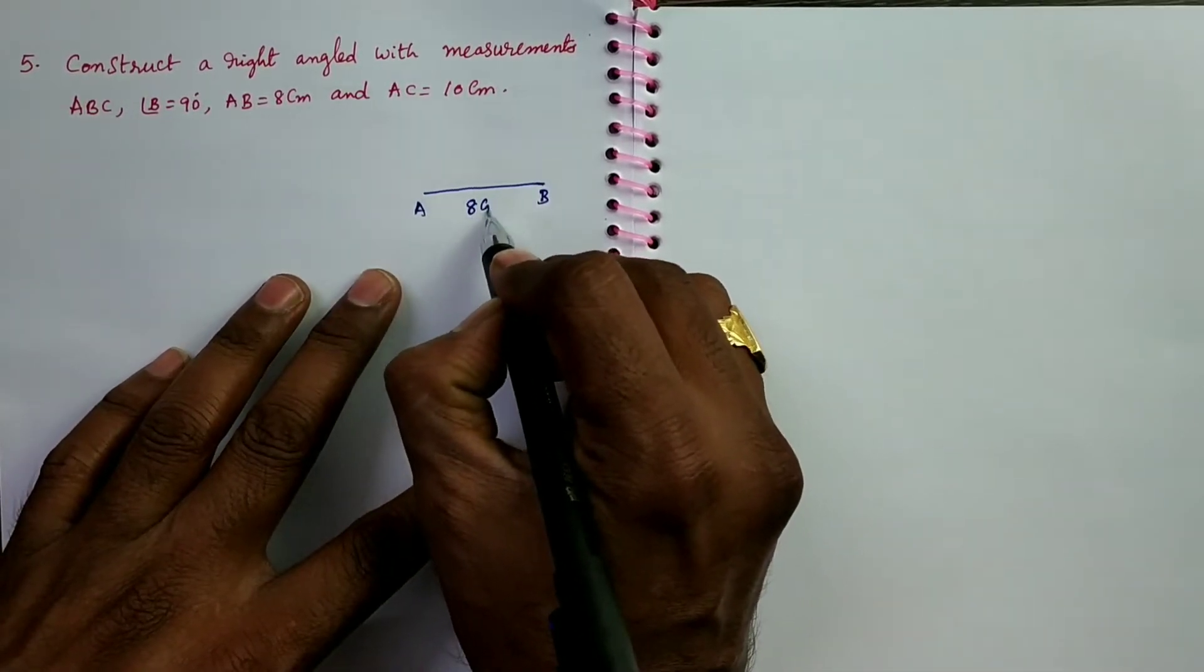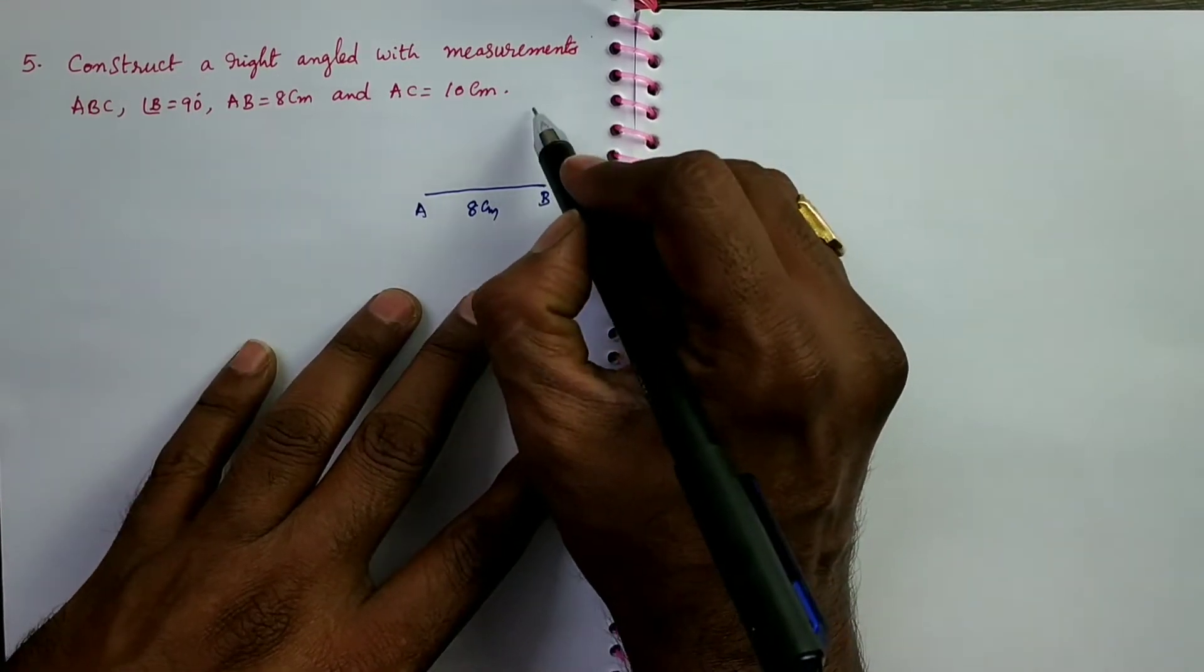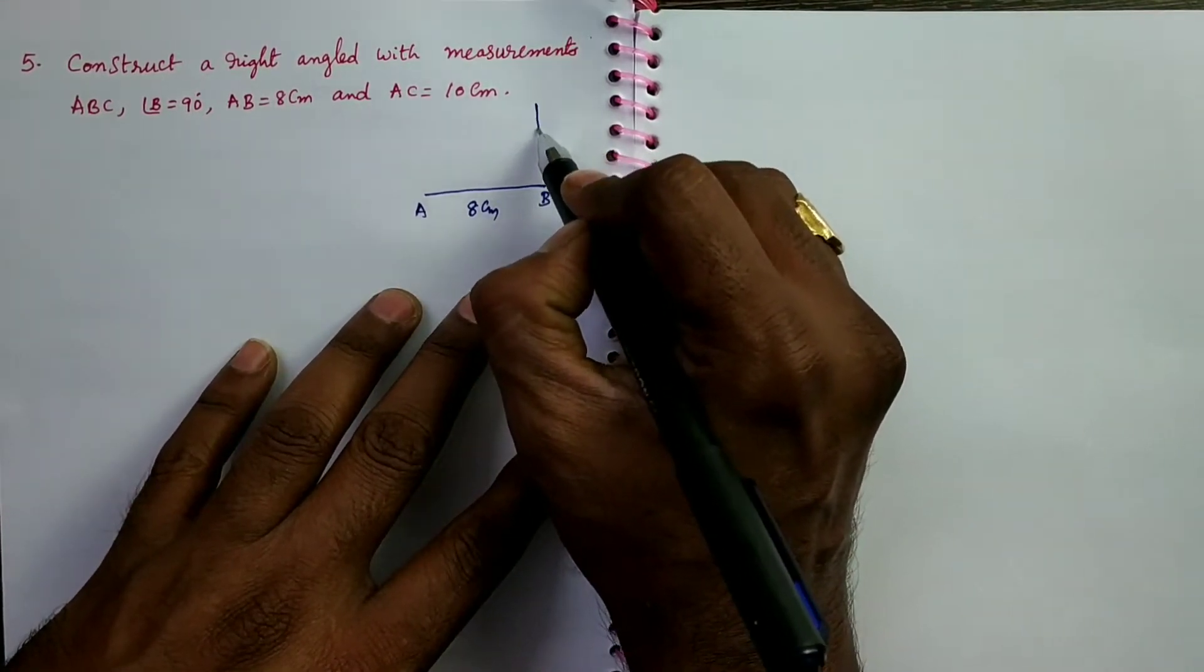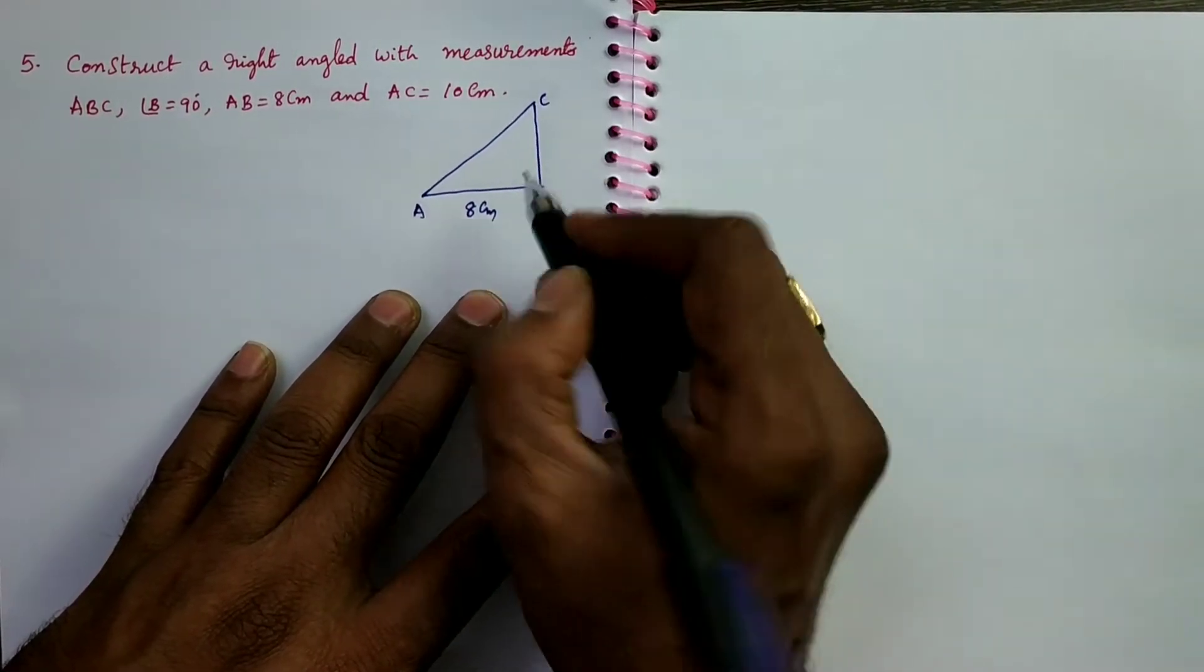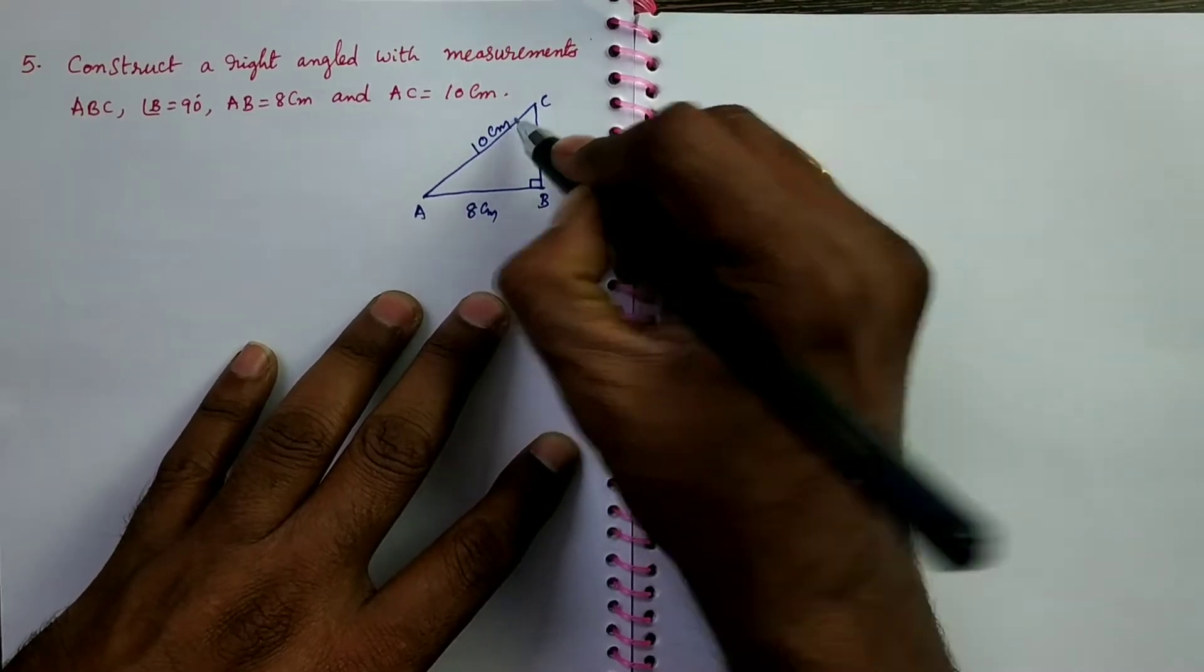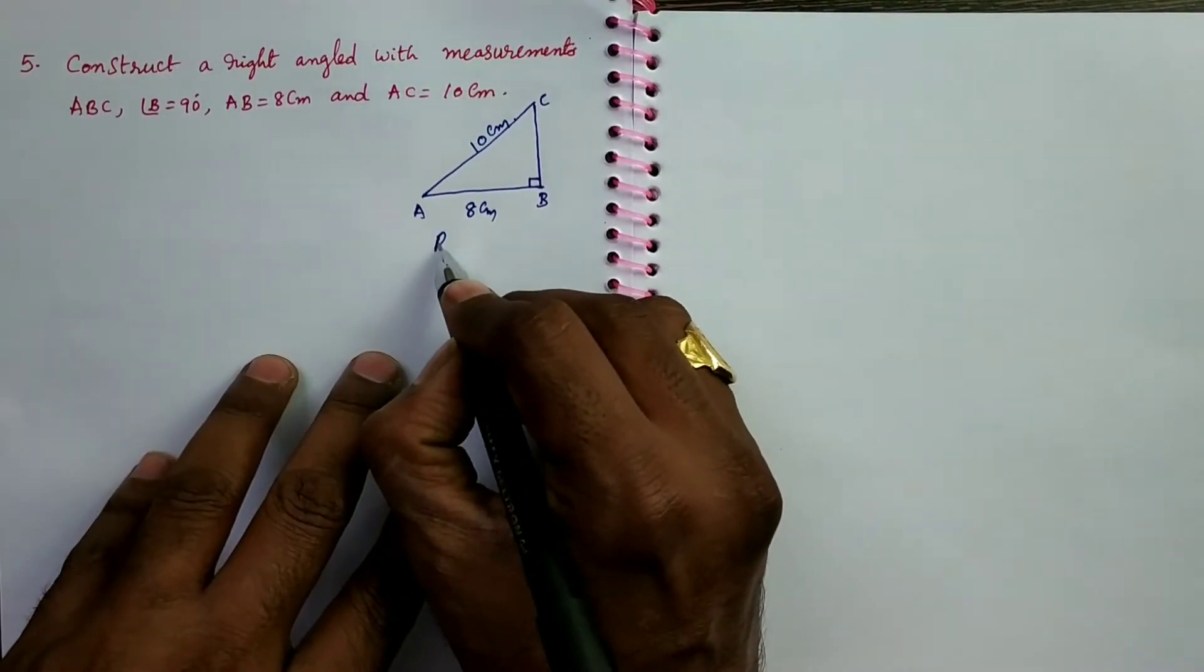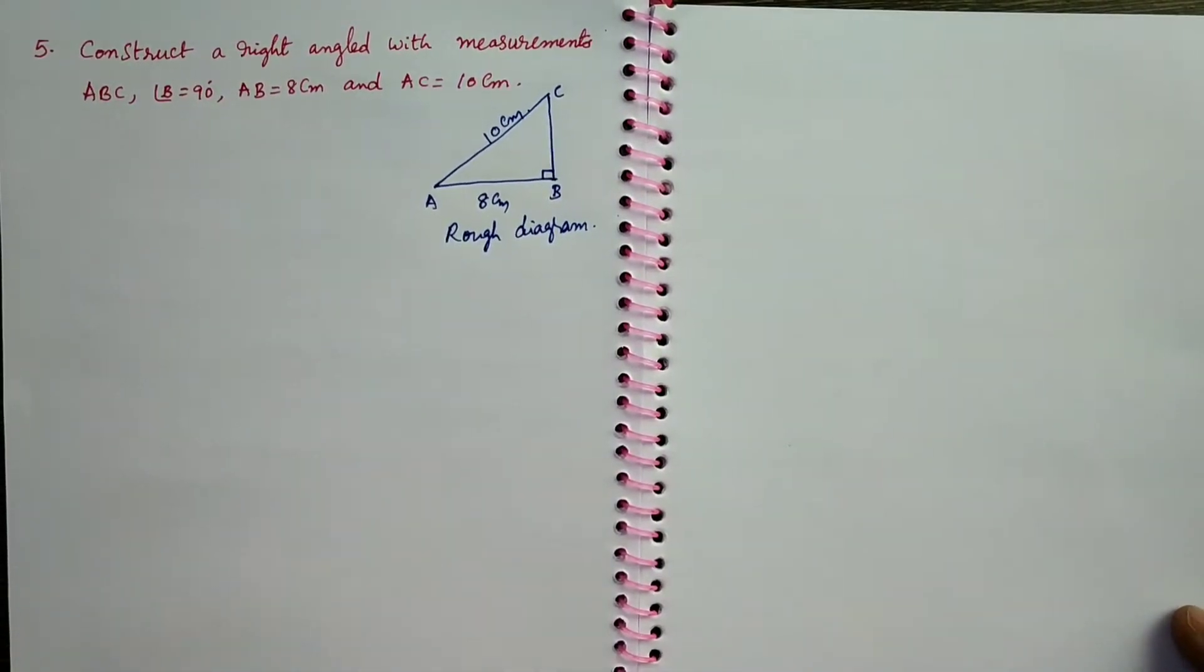AB 8 cm, angle B 90 degrees, and AC 10 cm. So here, angle B is 90 degrees, AC 10 cm. This is the rough diagram of given triangle. Next we have to construct the original diagram.